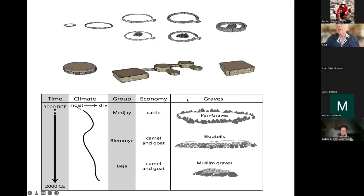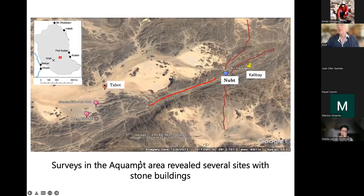Whether or not this is linked to the fishtail and the square towers, I don't know. The chronology of this is that we place the Pangraves with the Medjay, the Blemis with the Ekratels, and then the Beja with the typical Muslim graves.